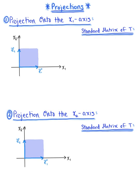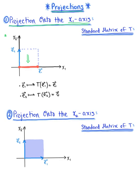The first geometric transformation we are exploring is projections, and we have two cases. Case 1 is a projection onto the x sub 1 axis. We take the unit square and project it onto the x sub 1 axis. The vector e sub 1 remains unchanged — it maps to itself — but e sub 2 is mapped to the origin, the zero vector. So the standard matrix of T is matrix A with first column 1, 0 and second column 0, 0.